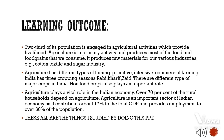Agriculture has different types of farming: primitive, intensive, and commercial farming. India has three cropping seasons: Rabi, Kharif, and Zaid. There are different types of major crops in India. New horticultural crops also play an important role.